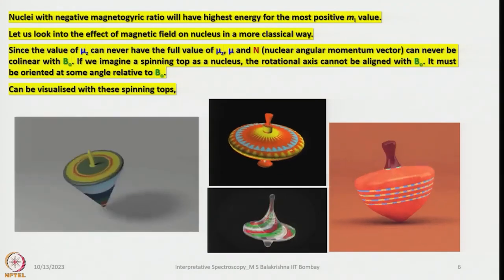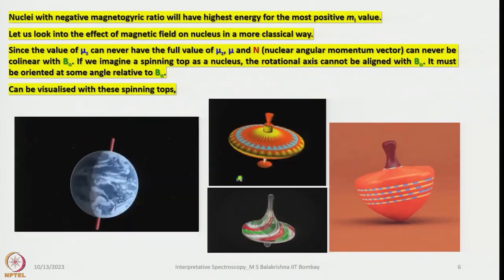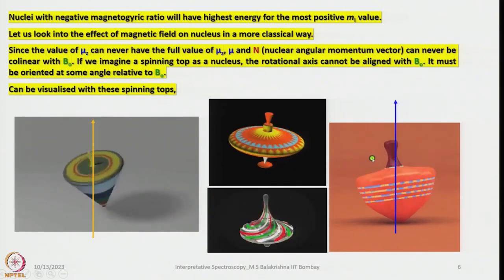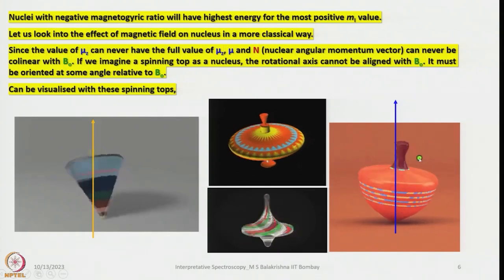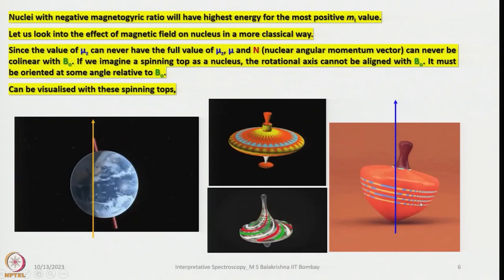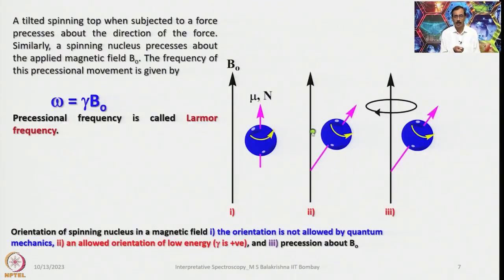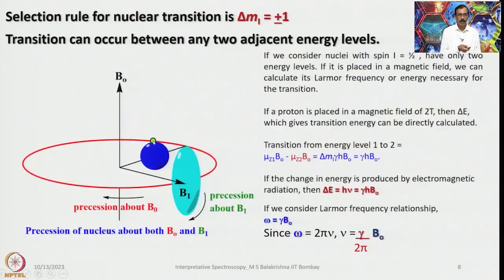To flip the nucleus, we apply another magnetic field perpendicular to the applied magnetic field, with a frequency corresponding to the precession frequency of the nucleus under the major magnetic field. When resonance occurs, flipping takes place. The direction of the applied field is the axis; the nuclei precess with respect to it. Quantum mechanics does not allow perfect alignment — they always precess at an angle about B₀.